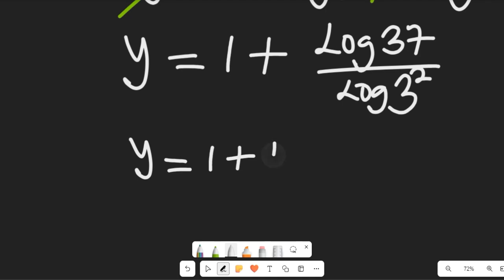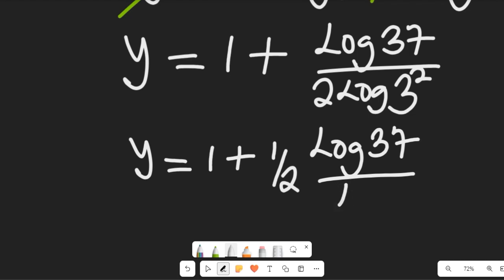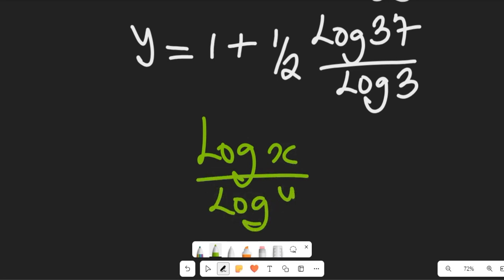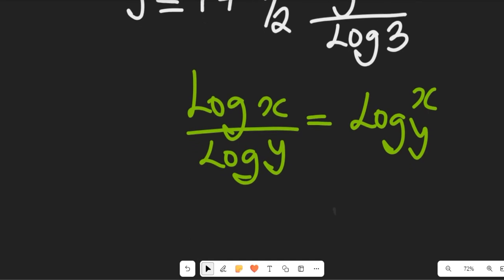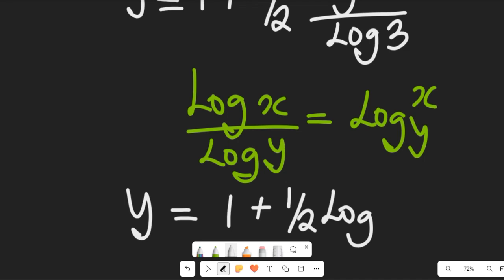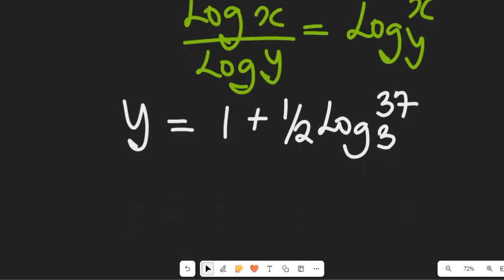We can simplify further: log of 3 squared equals 2 log 3, so the expression becomes y equals 1 plus log of 37 divided by 2 log of 3. Recalling the logarithm change-of-base law where log x divided by log y equals log base y of x, our final answer is y equals 1 plus one-half times log base 3 of 37.